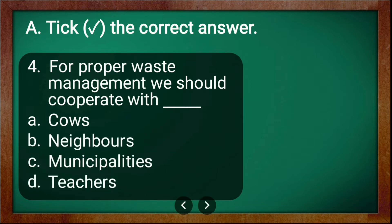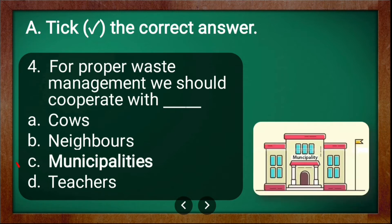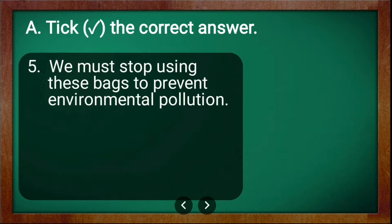Fourth question: for proper waste management we should cooperate with — the options are cows, neighbors, municipalities, teachers. The answer is municipalities, because municipalities generally deal with the management of wastes.